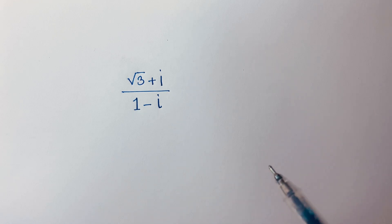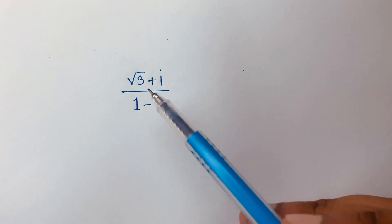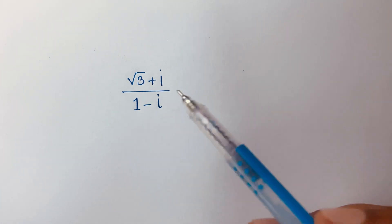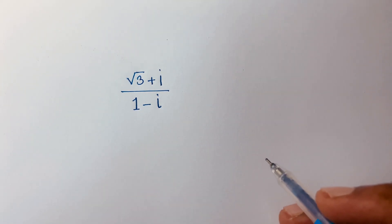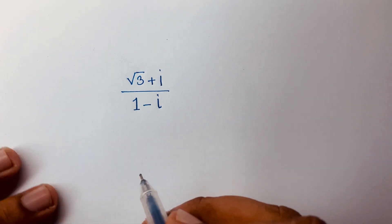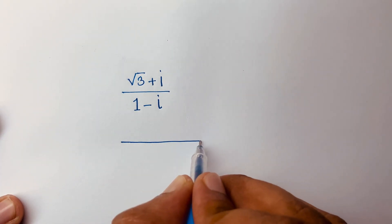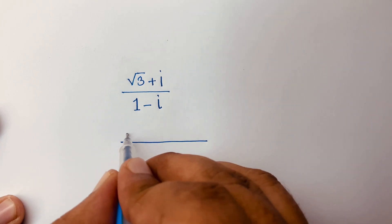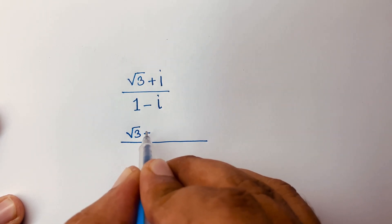Hello everyone. We'll find out the argument in this math question: square root of 3 plus i, over 1 minus i. To find out the argument, first of all, we have square root 3 plus i in the numerator.